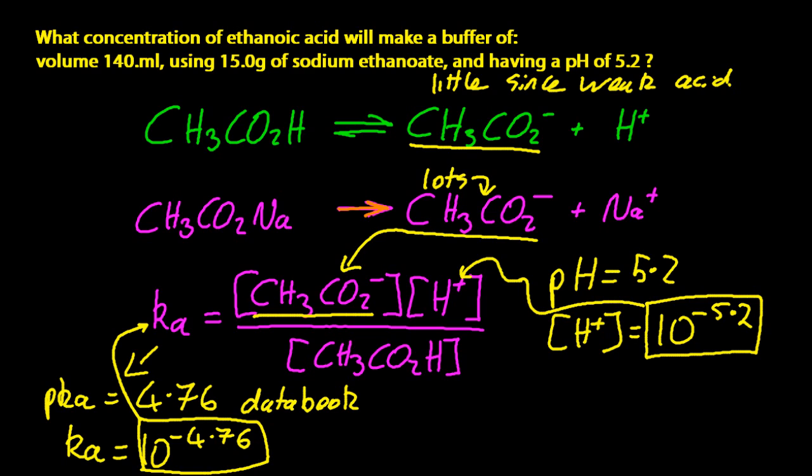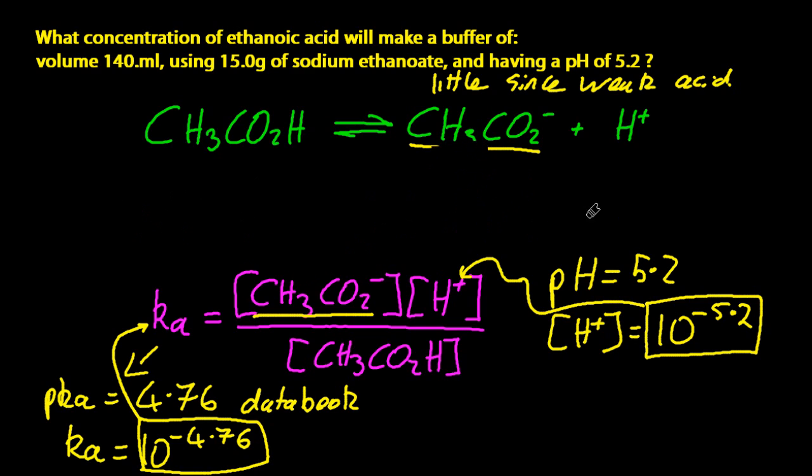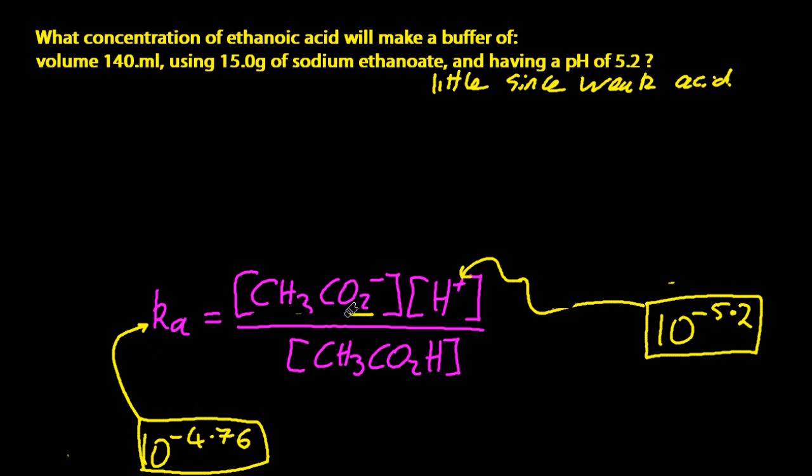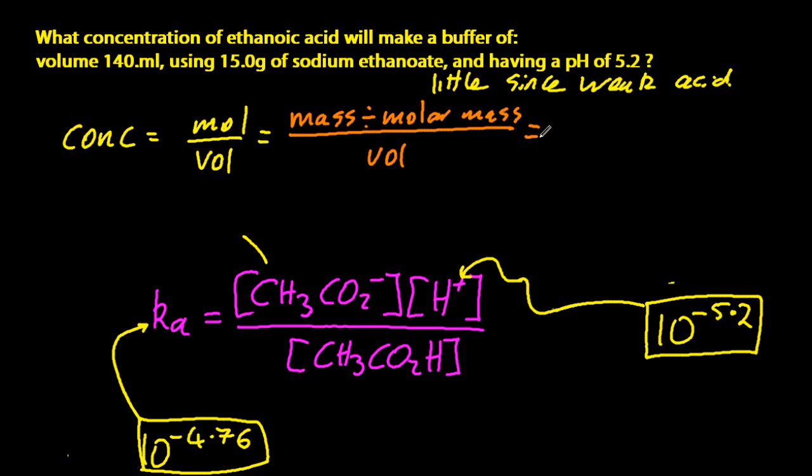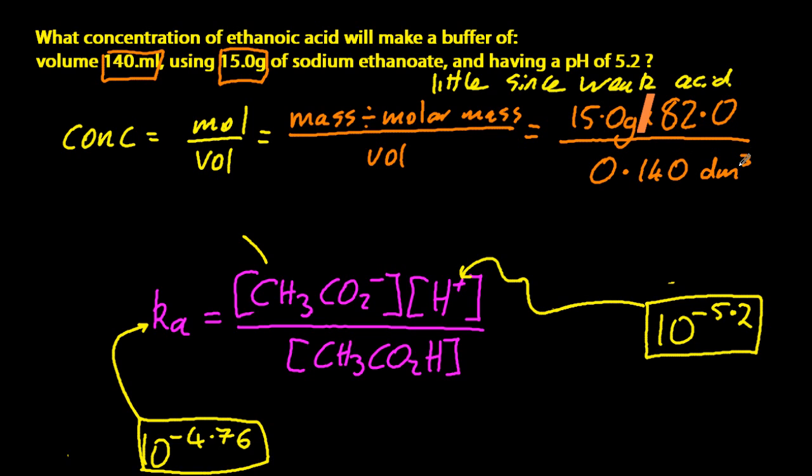If you can't remember these tricky assumptions, just say that you assume STP, and the IB might let you get away with it. All righty, so the concentration is moles over volume, and I haven't got the moles, but I've got the mass and the molar mass. That's great. That's moles anyway. That big fat slash is divide, 15 divided by 82, and my volume converted to decimetres cubed is 0.14.